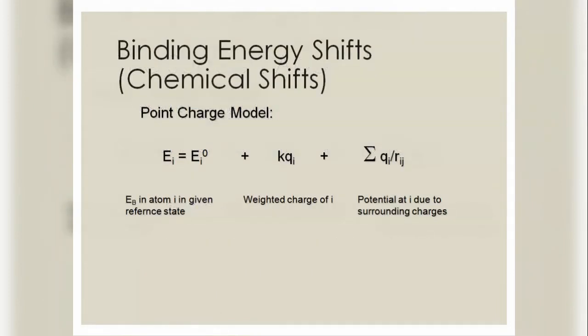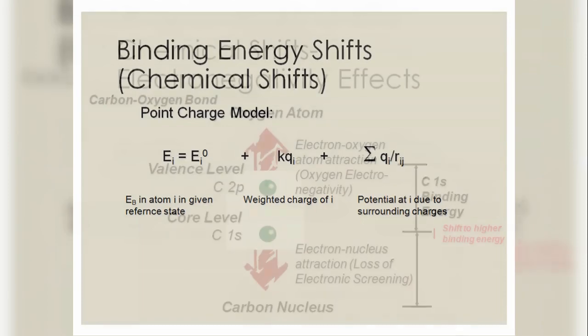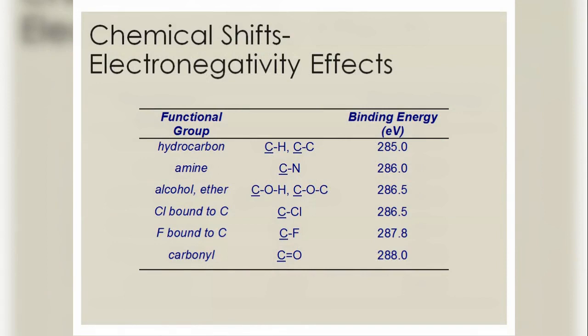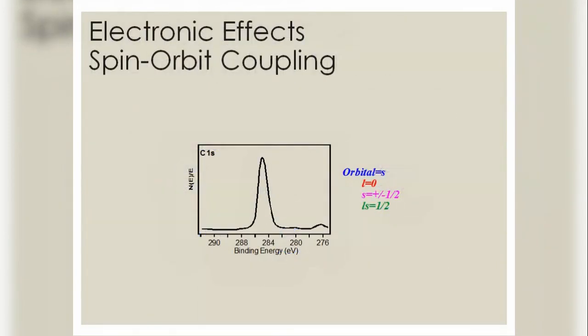Binding energy shifts include chemical shifts using the point charge model. Chemical shifts also arise from electronegativity effects. The oxygen atom affects the valence level and core level. Carbon nucleus C1s binding energy shifts to higher binding energy due to electronegativity effects.